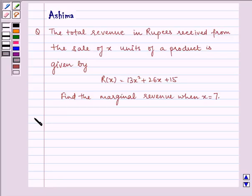Now let's proceed to the solution. Given to us that R(x) = 13x² + 26x + 15, where R(x) is the total revenue.